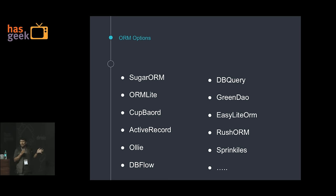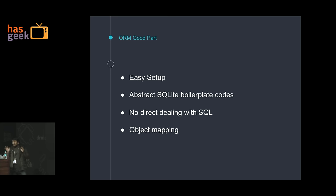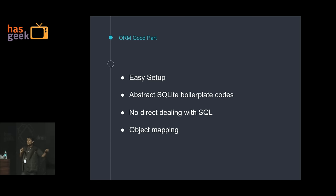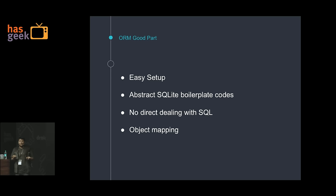These are some of the ORMs available for Android — I have listed just eight. A couple are by Indian developers; the first, Sugar ORM, is by Satyan. What does an ORM give you? It abstracts all this boilerplate code from SQLite — that thousand lines of code — away. With simple implementation you can use an ORM and it will simplify all your queries. No direct dealing with SQL, no more SELECT star. It gives you object mapping, so you can query objects directly rather than raw SQL.